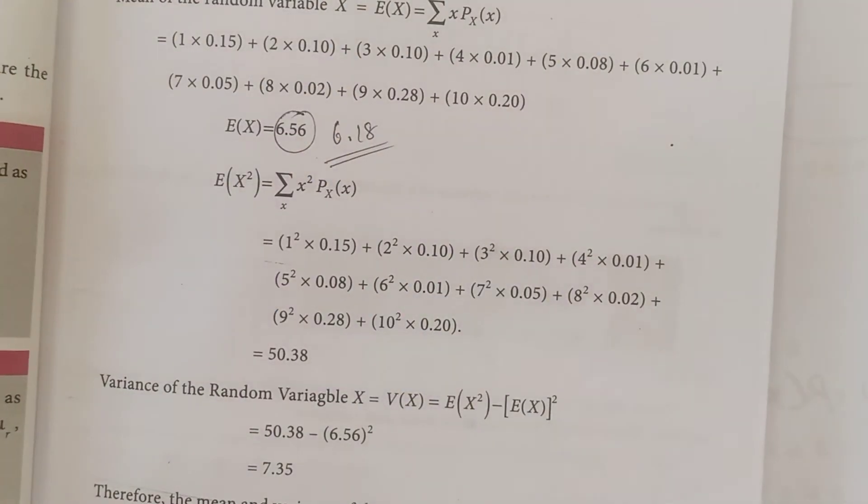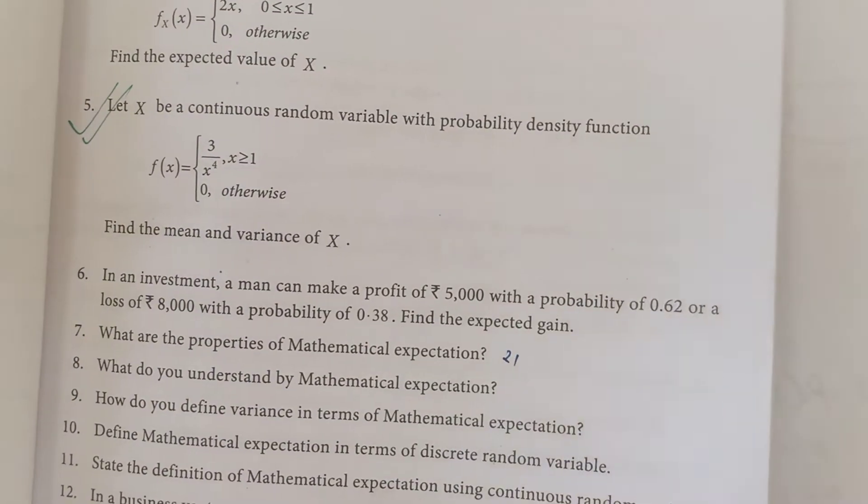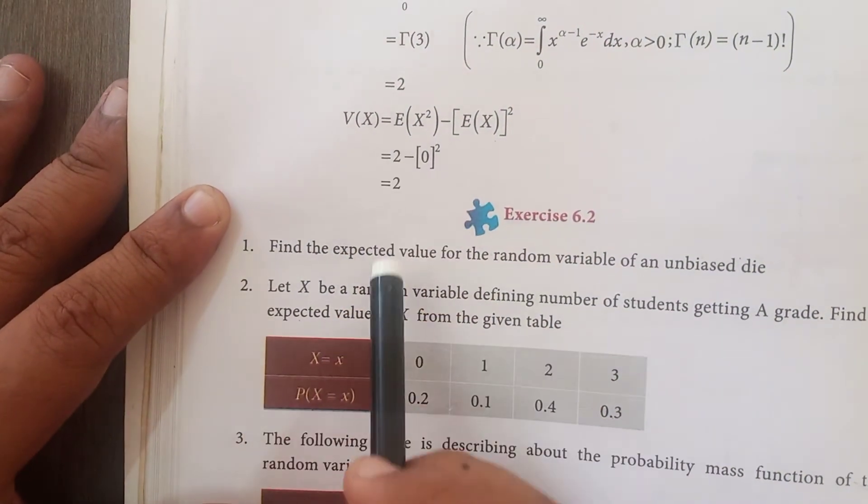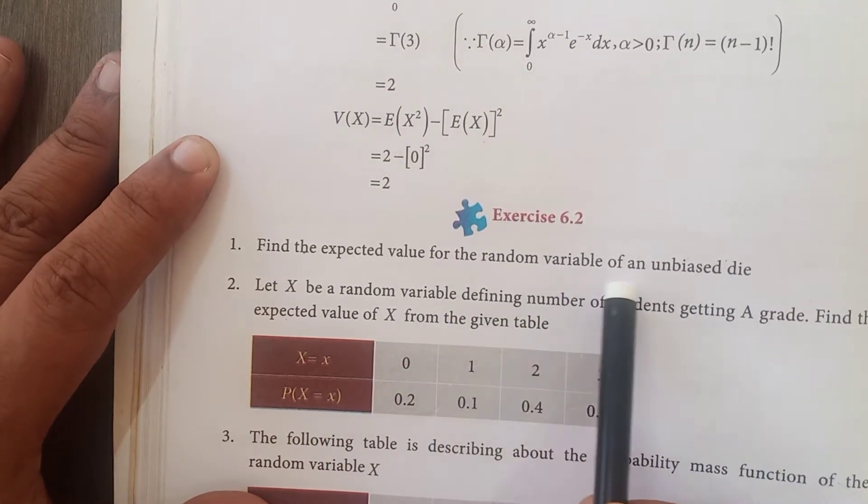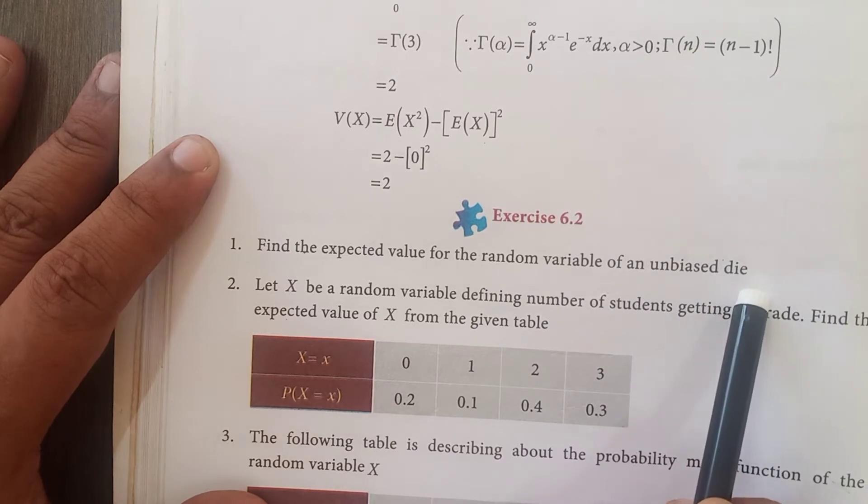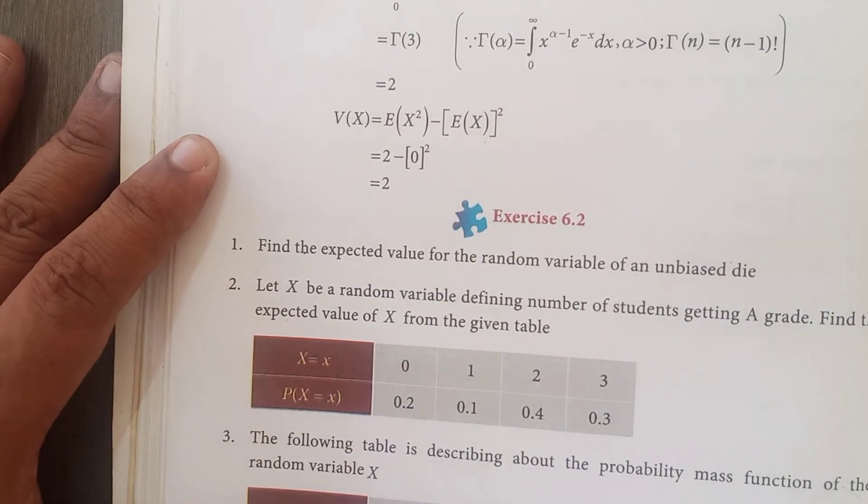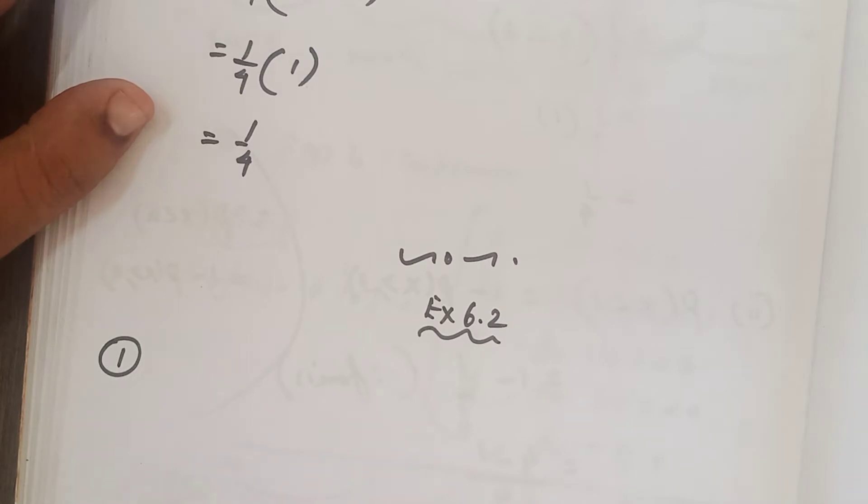Now we can get into that first problem in exercise 6.2. Look at that. Find the expected value for the random variable of an unbiased die, question number 1. Here, straight we can write the probability mass function. Capital x, probability of capital x that is equal to x.